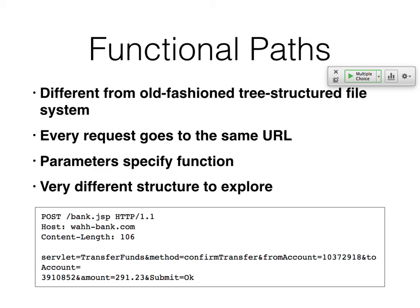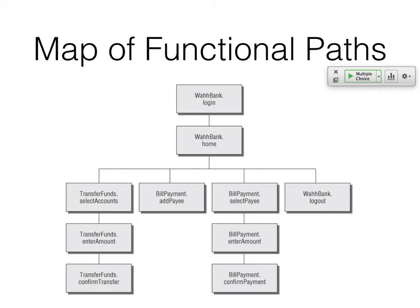You can have functional paths where every request goes to the same URL and you have parameters that specify things like transfer, from account, to account, amount — so the page will have different content but it's all the same URL. That will befuddle an automated scanner. You'll have a functional path where you log in, select a payee, transfer funds, and log out, all done with the same URL. The one-to-one mapping between URL and content doesn't hold, and that's going to mess up the whole logic of a spider where you want one answer for each URL.